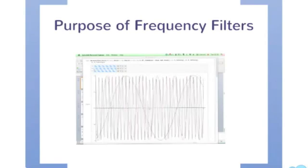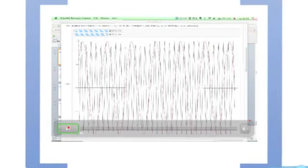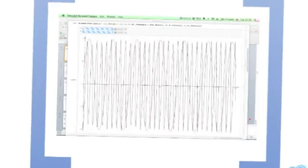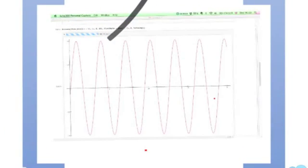Suppose we want to obtain the red signal only. How do we accomplish that? Well, we can use filters to do the job. We can filter out the blue signal first. Then we can filter out the black signal. Now we get our desired result, the red signal only.